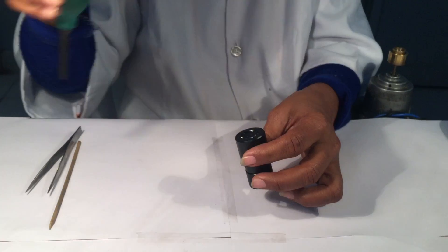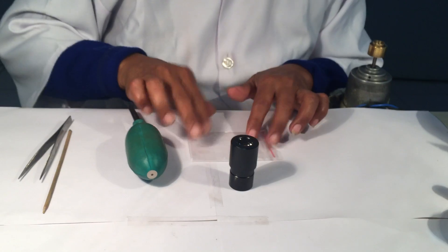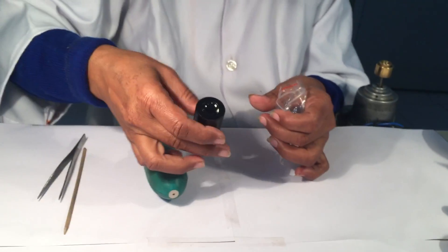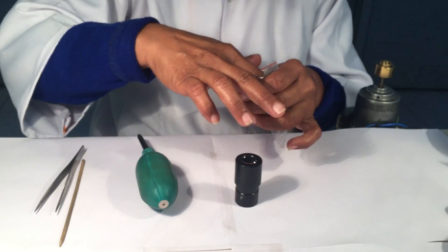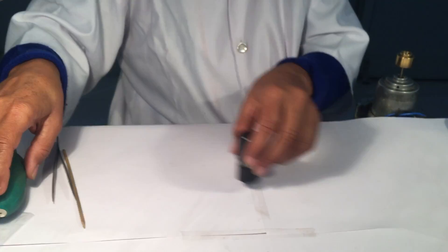And we will air blow the same, just in case any dust particle is left. Just to check whether the eyepiece is correct, we will place it on the microscope and we will check on the slide itself.